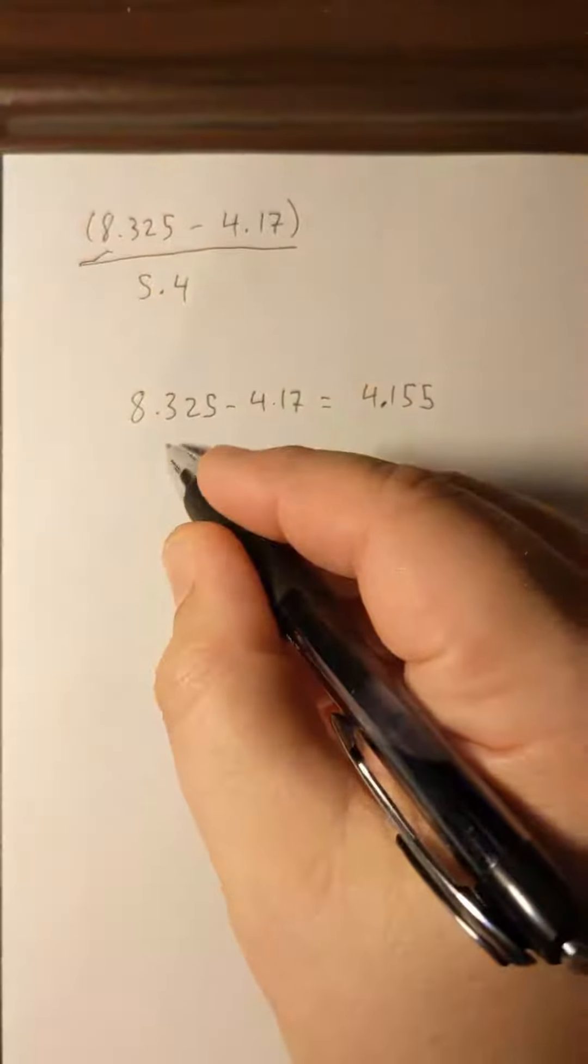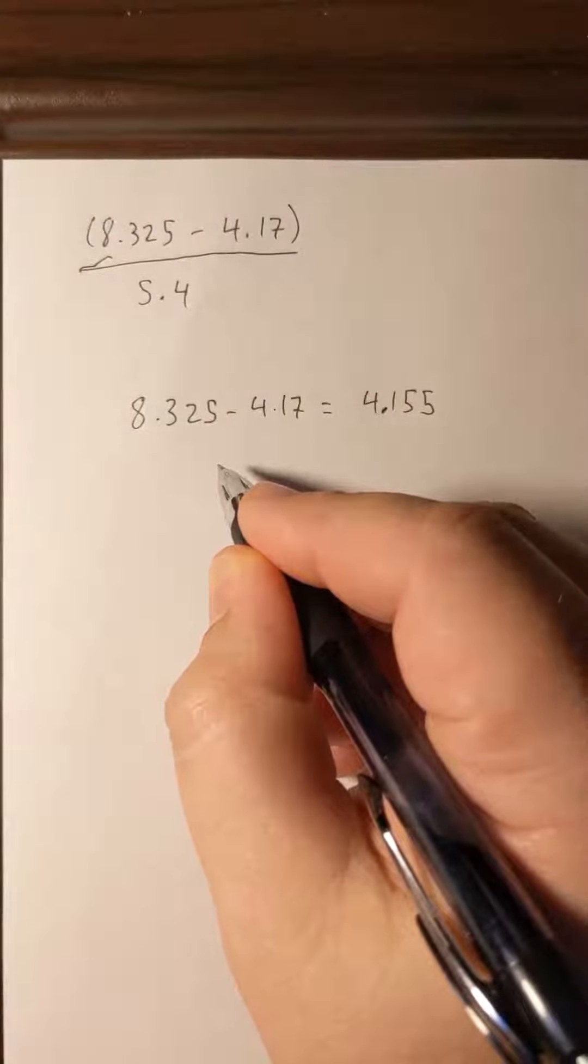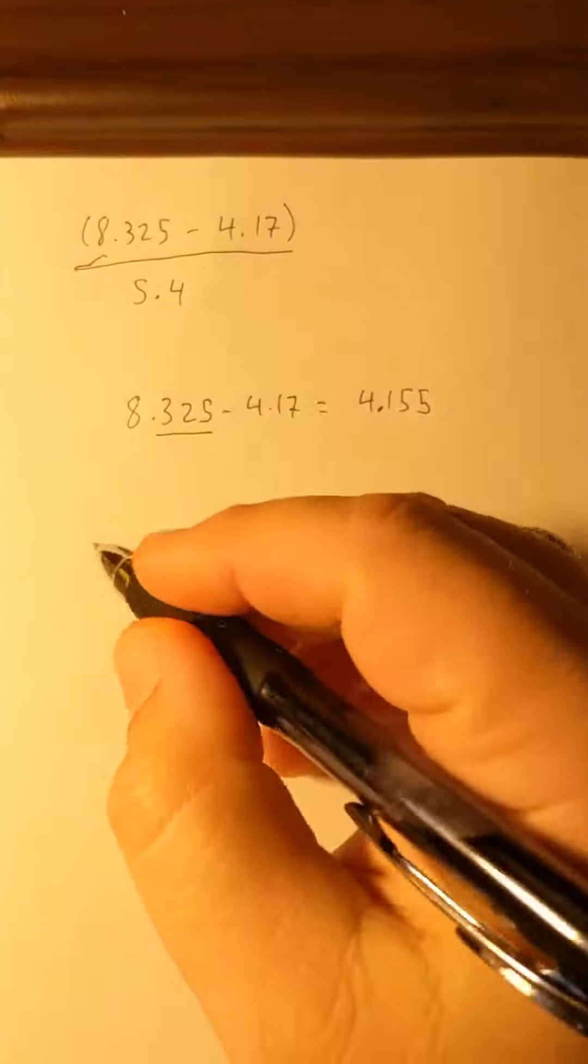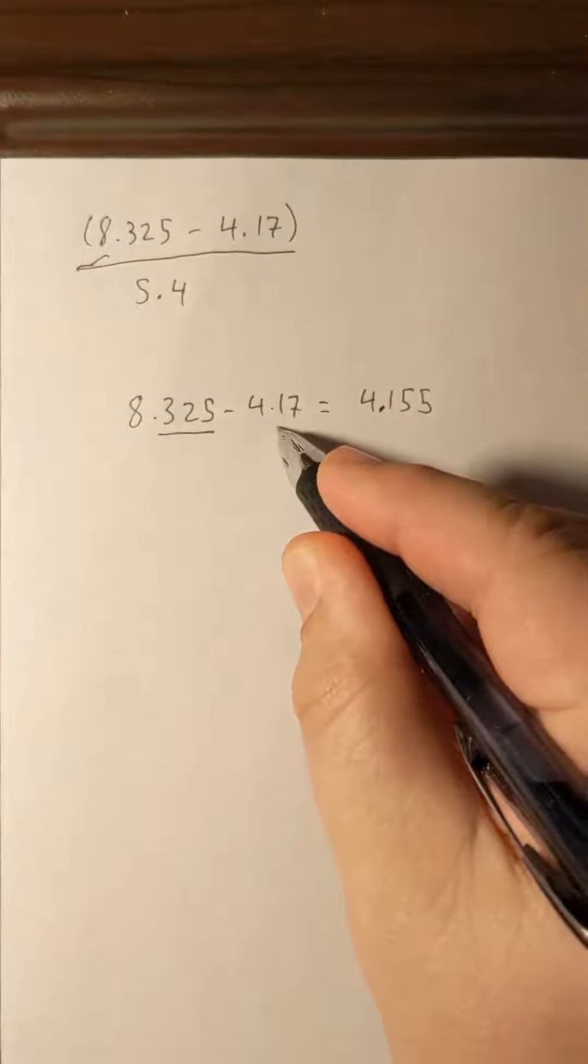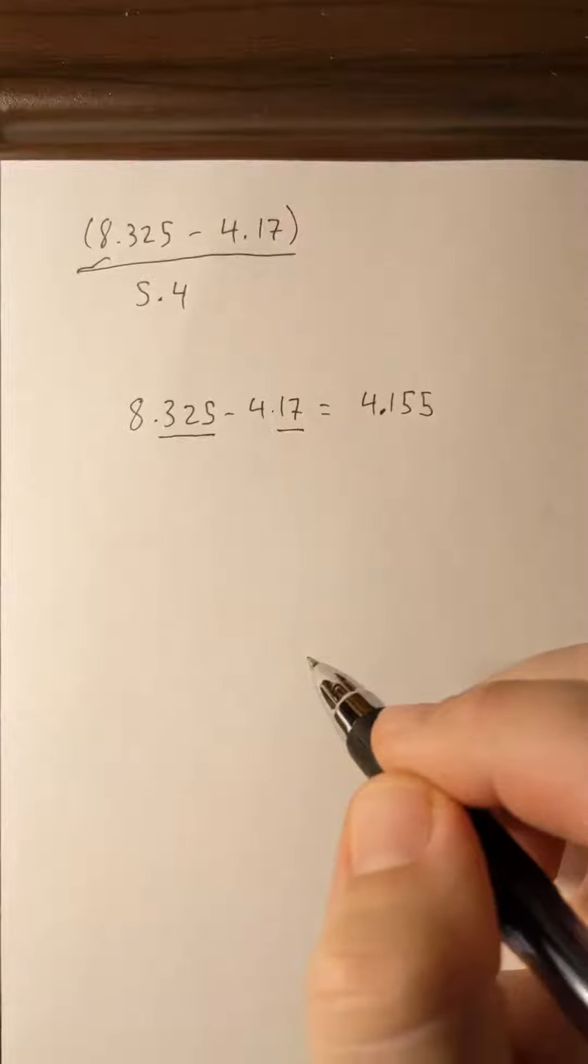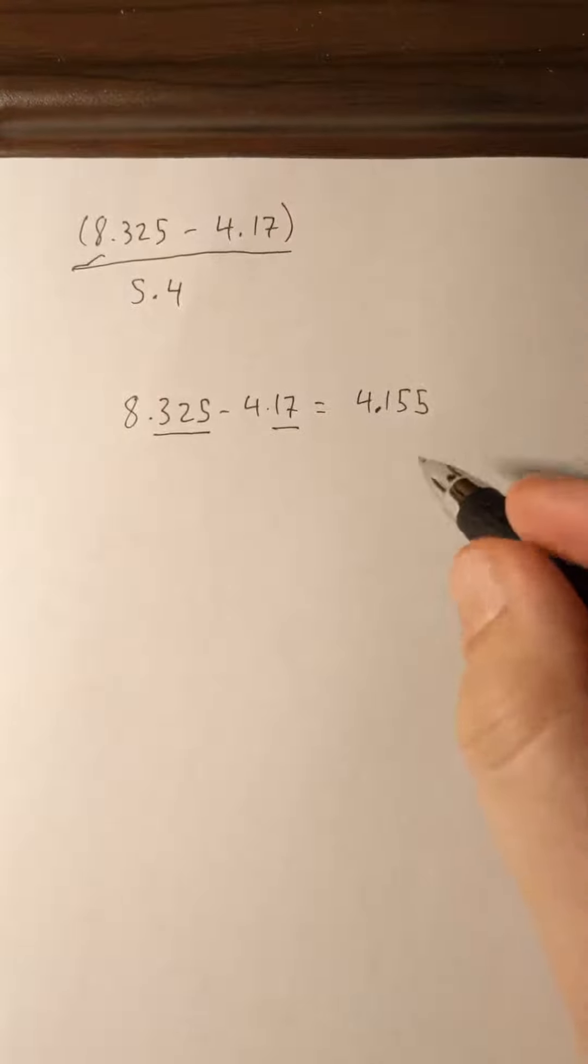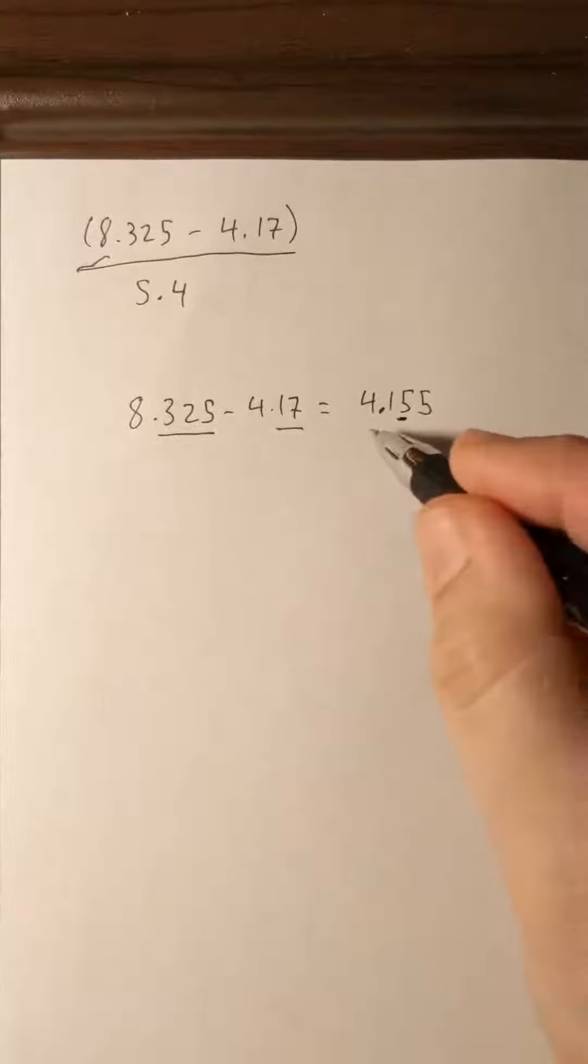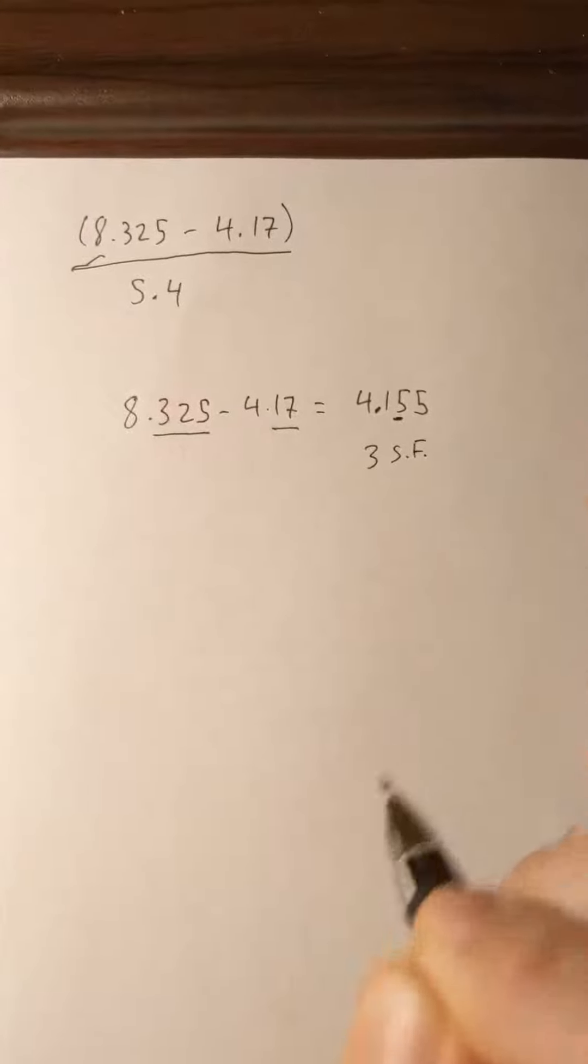We just need to figure out how many significant figures it should have. Remember, because it's subtraction it'll be based on decimal places. This number has three decimal places and our other number only has two. So we want to round our final answer here to two decimal places. This number will actually have three significant figures.